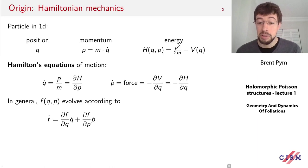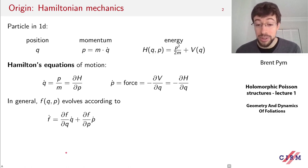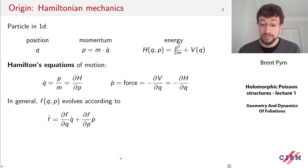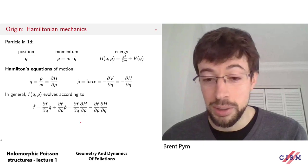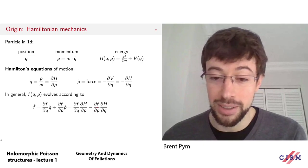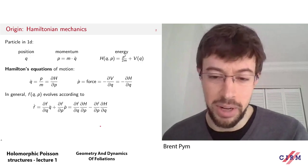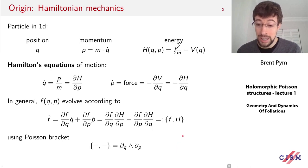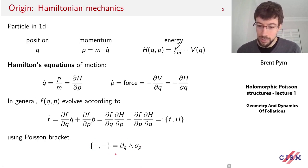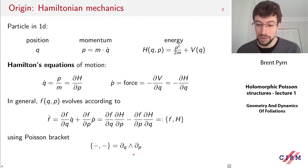If we want to know how any other physical quantity evolves in time — say some function f of q and p — we can use the chain rule. So f-dot is the derivative of f with respect to q times q-dot, plus the derivative of f with respect to p times p-dot. Using Hamilton's equations of motion, I can rewrite q-dot and p-dot in terms of H, and I get: df/dq · dH/dp minus df/dp · dH/dq — a skew-symmetric combination of the derivatives of f and H. This expression occurs so often it's given its own symbol, curly brackets, called the Poisson bracket of f and H.